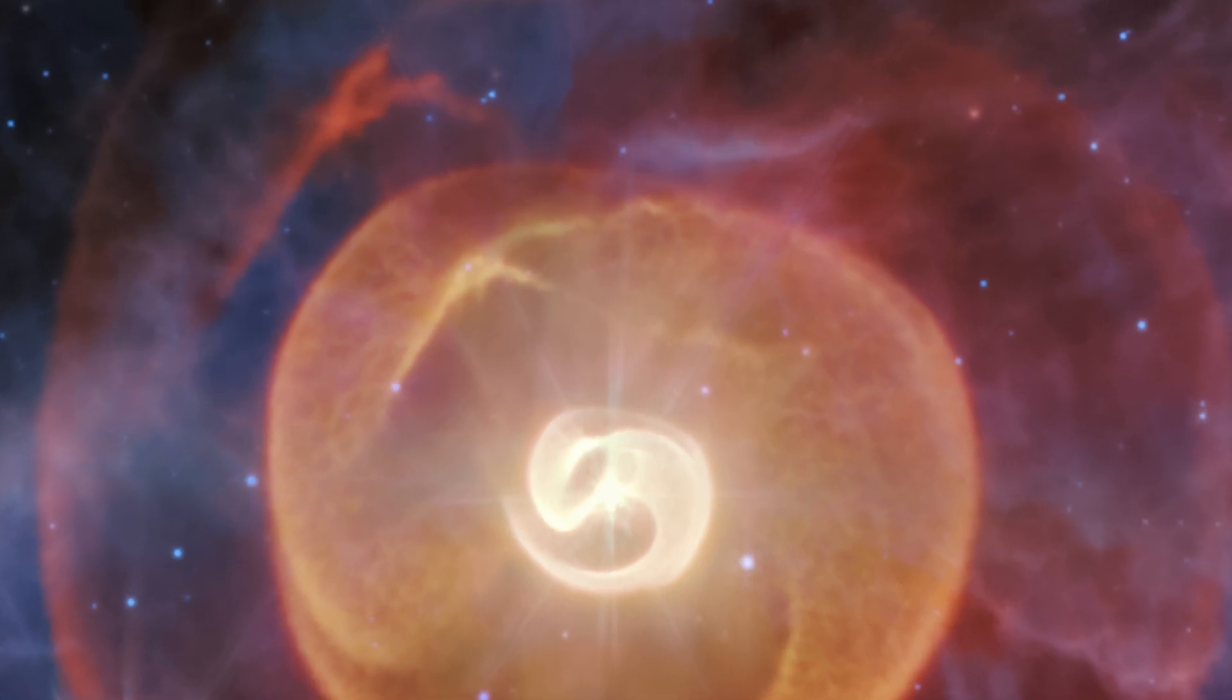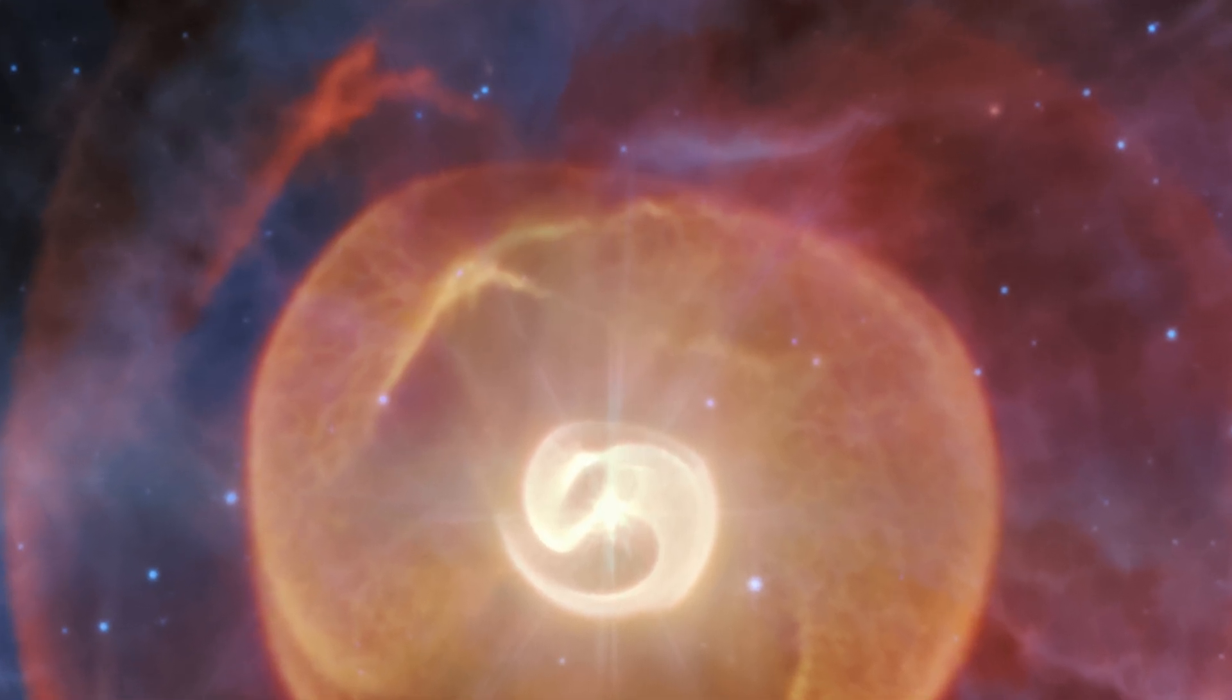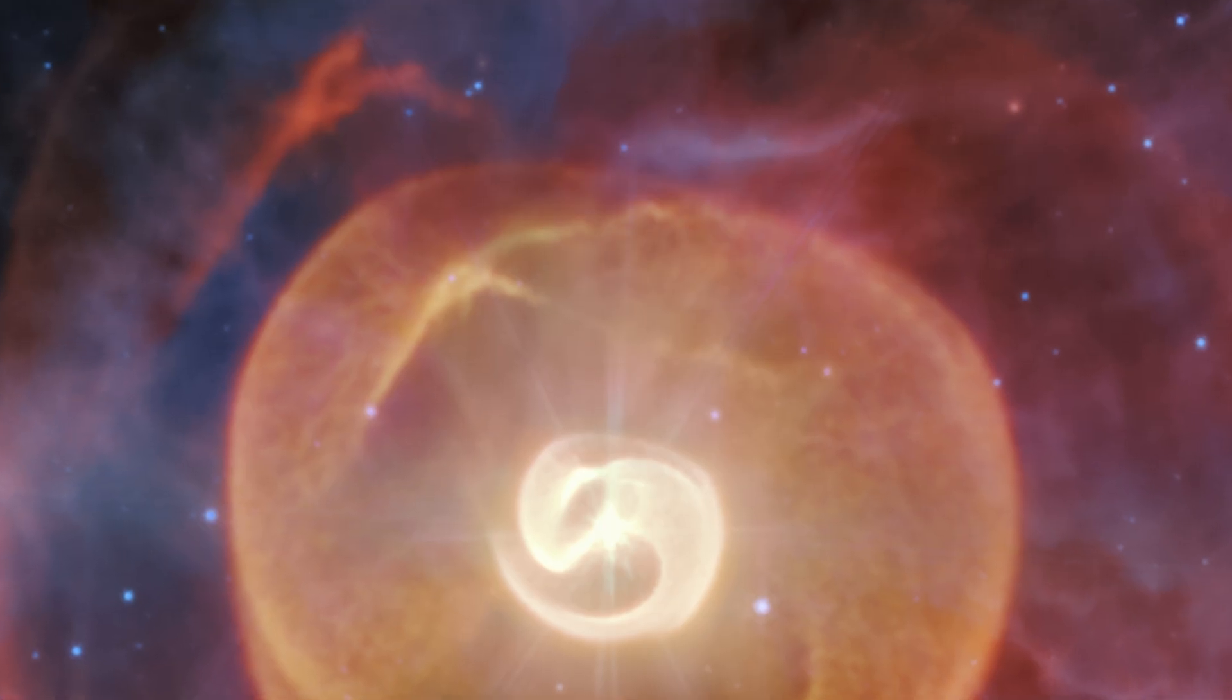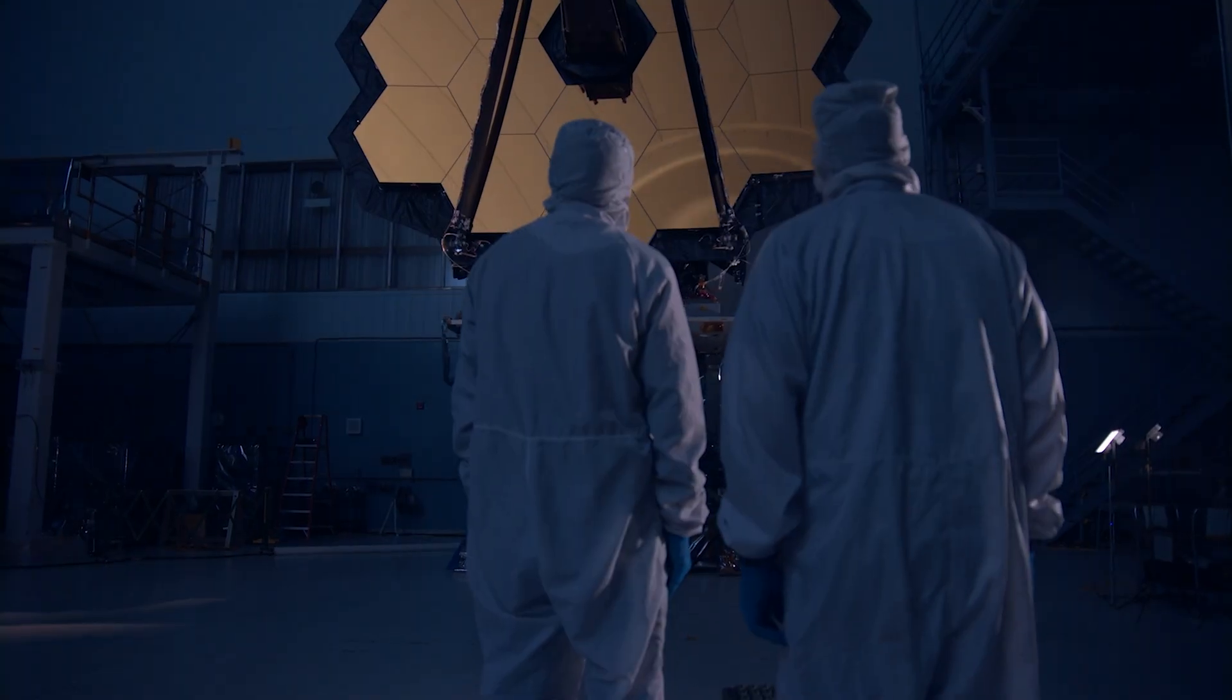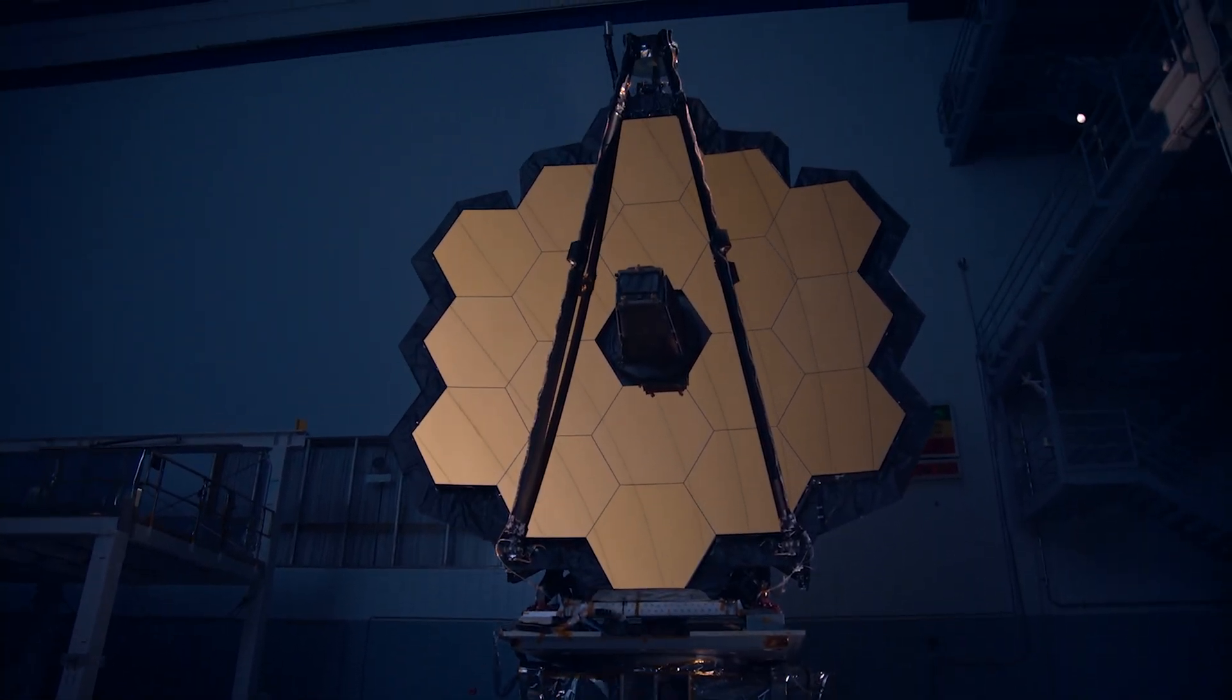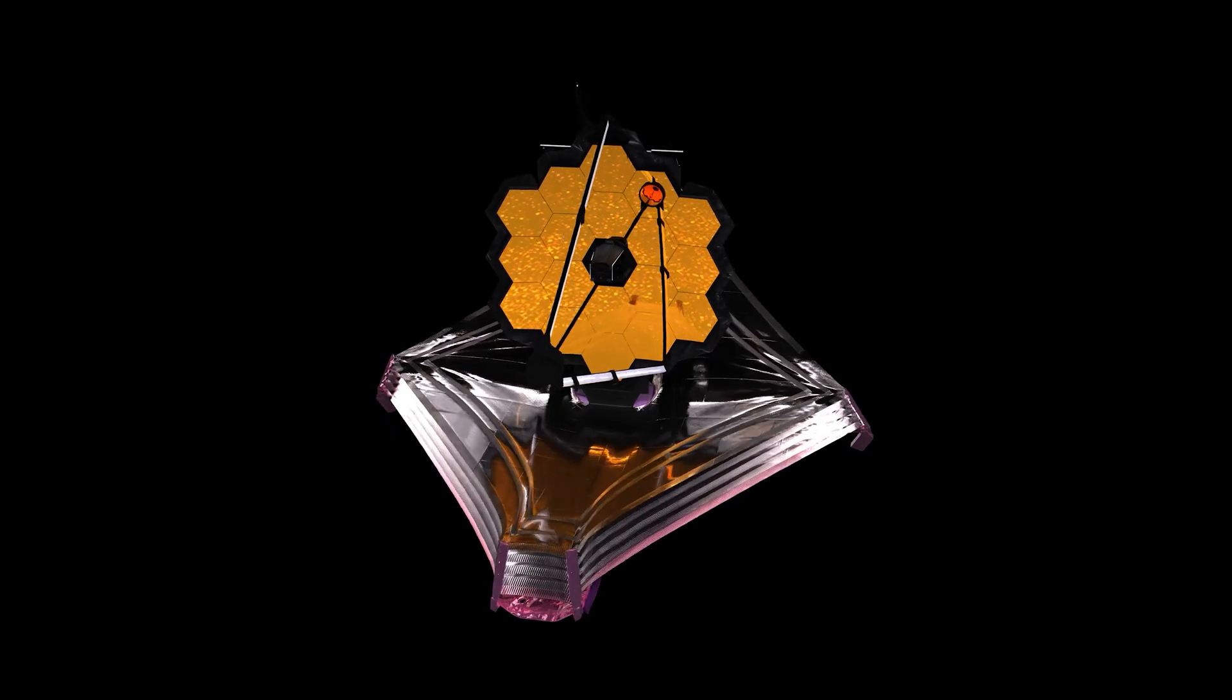And this helps explain why JWST sees so much more here than previous images did. I do say higher temperatures, but it's still very cold and faint out there in space. Meaning we really do need something like JWST to get this kind of detail in the images.